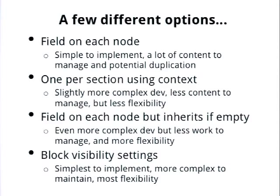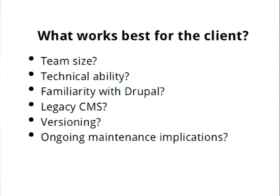Here are just a few of the many ways to do this. A field on each node: that's a lot of work but lets you target each page, though you'll get a lot of duplication. One block per section: a little bit more complicated to build, but a lot less content to manage. A field on each node that inherits if empty: even more complicated to build, but a lot of flexibility. Block visibility settings: really simple to implement and gives you a lot of flexibility, but it can be a little bit scary — there's a lot of potential to break things on that manage blocks page. Each one offers a different balance of ease of management, ease of development, and complexity.